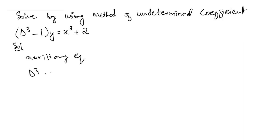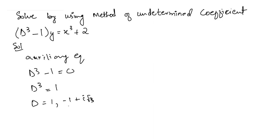The auxiliary equation is d³ minus 1 equals zero, so d³ equals 1. Finding the cube roots, we get 1 as one cube root, and the other two complex cube roots are (−1 + i√3)/2 and (−1 − i√3)/2. These are our three characteristic roots.